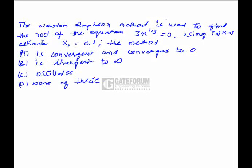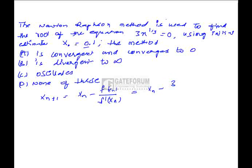In this question, the Newton-Raphson method is used to find the root of the equation 3 * x^(1/3) = 0, and the initial approximation x₀ is given as 0.1. The Newton-Raphson iteration formula is x_(n+1) = x_n minus f(x_n) divided by f'(x_n). Here f(x_n) = 3 * x_n^(1/3) and f'(x_n) = x_n^(-2/3). Simplifying this expression, we get x_(n+1) = minus 2 * x_n.